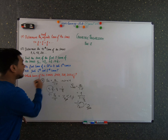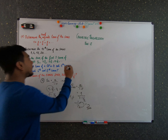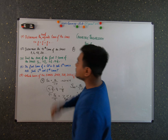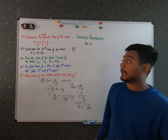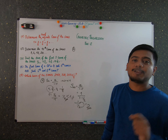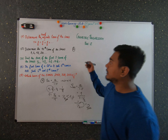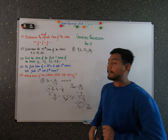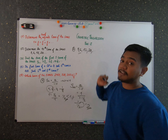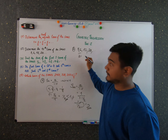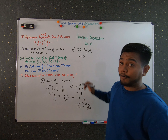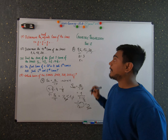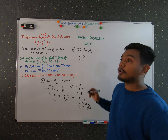Now let's do the second problem: determine the tenth term of the series 3, 6, 12, 24, and so on. This is a geometric sequence. The first term a = 3. We need to find the common ratio r using successive terms.